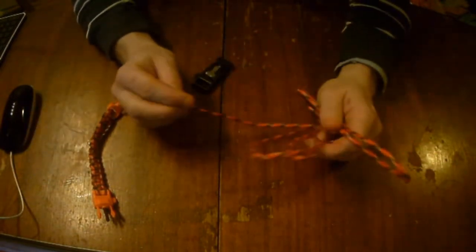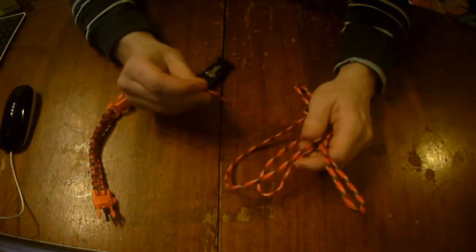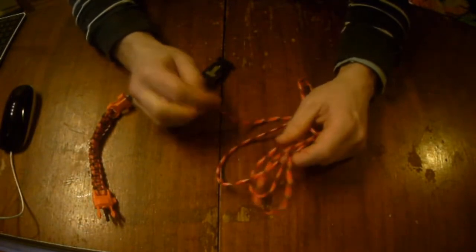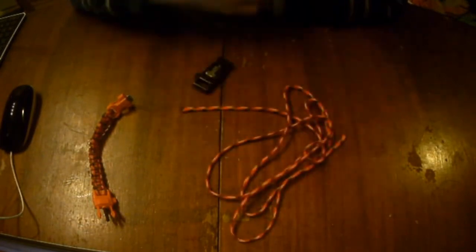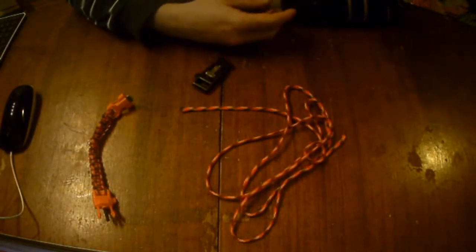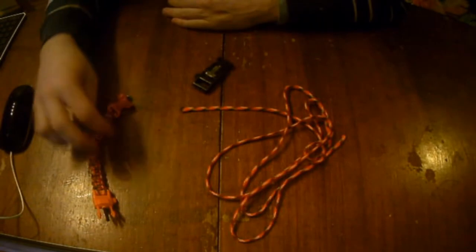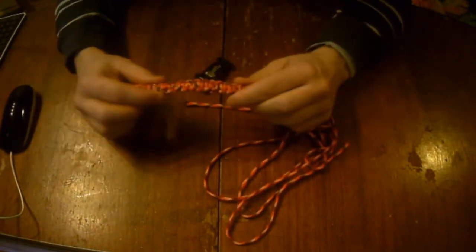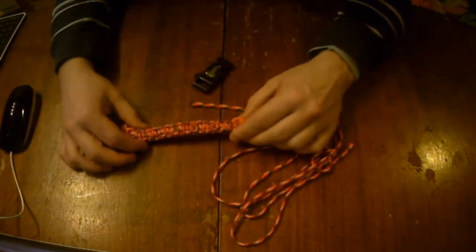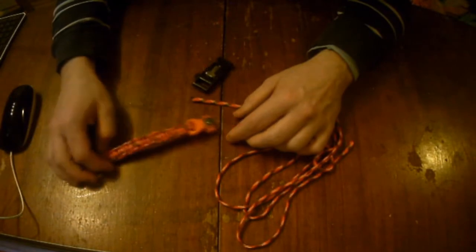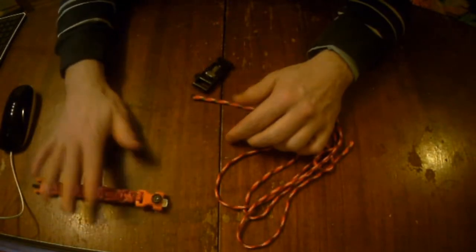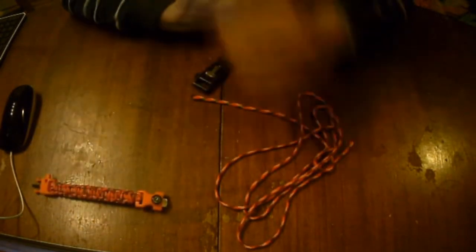What you need to do is get the length of paracord and you'll need a foot for every inch that your wrist is. So if you've got a seven-inch wrist, then you'll need seven feet of paracord because the pattern we're going to do today will take up a foot for every inch. So you'll need about seven to eight feet of paracord if you've got a seven-inch wrist, and so on and so forth.